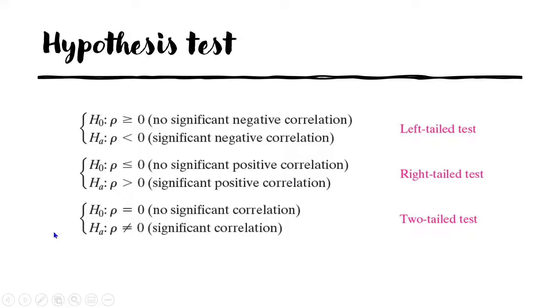For the two-tail test, H₀ is: rho is equal to zero, meaning there is no significant correlation. The alternative hypothesis Hₐ is: rho is not equal to zero, meaning there is a significant correlation.